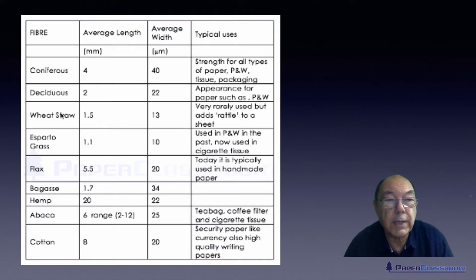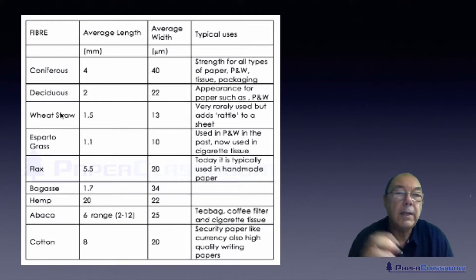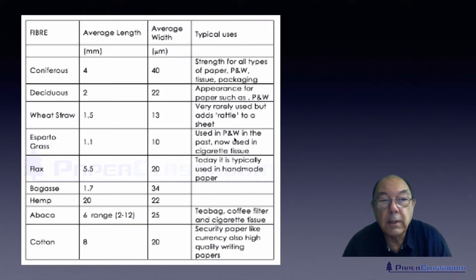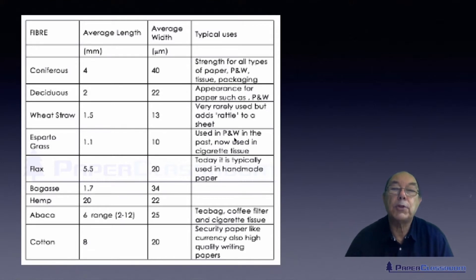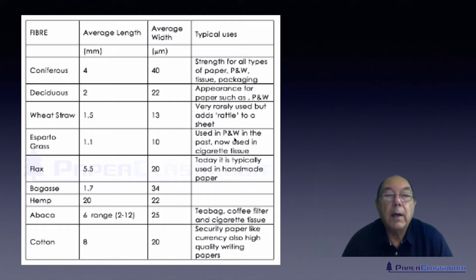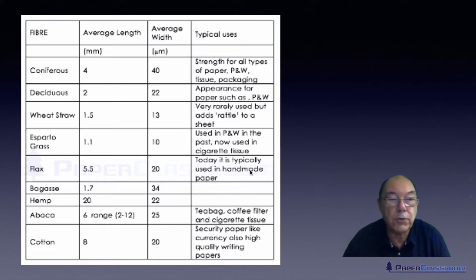Straw has been used in some countries like Spain and Pakistan — it's really difficult to handle, but it adds an interesting feature to paper: when you shake paper containing straw you get almost a metallic rattle to it. Esparto grass was used by many mills because it had the best appearance and was ideal for printing. But as printing processes got faster and faster, the strains on the paper got greater, and the paper couldn't cope — it tore in the printing presses. So we had to abandon esparto and start using longer fibers like softwoods.